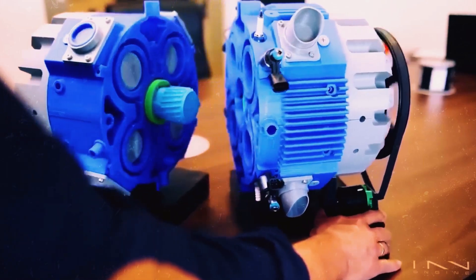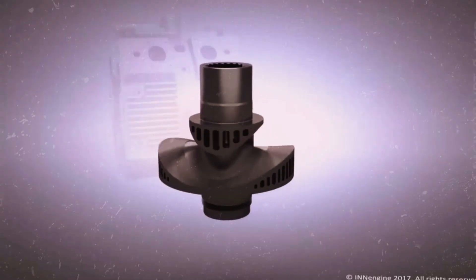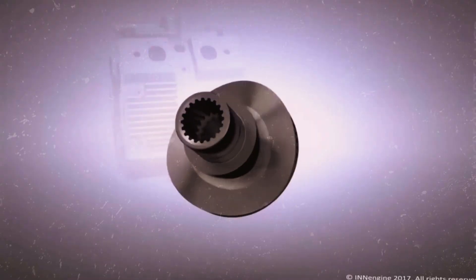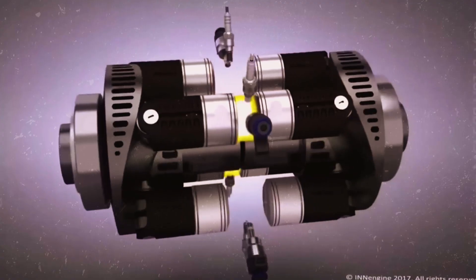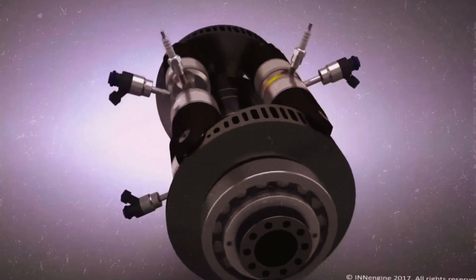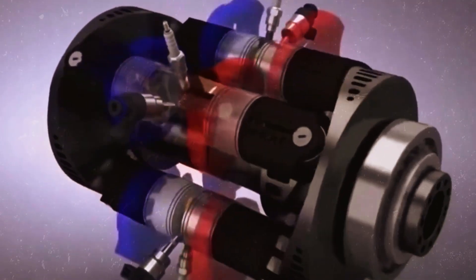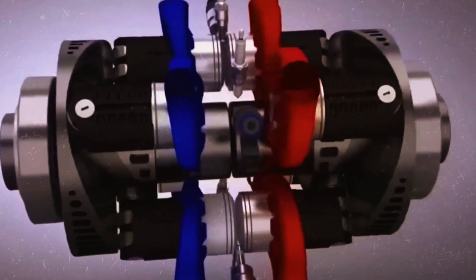The architecture of the ION engine is genuinely pioneering. It incorporates an opposed-piston mechanism, featuring four pistons on each side, amounting to eight in total. These pistons share a combustion chamber and are propelled by fixed rods, which in turn drive plates with a corrugated design, ensuring a seamless and coordinated piston movement.